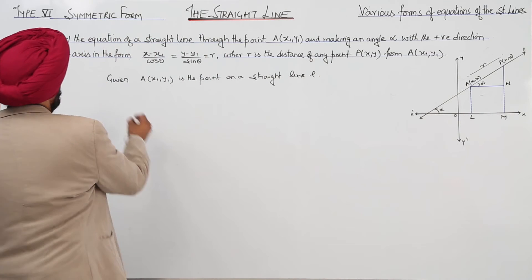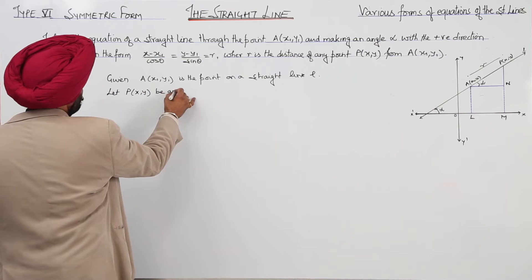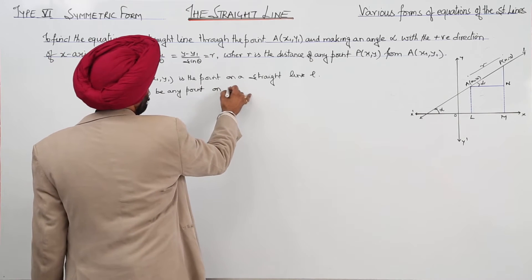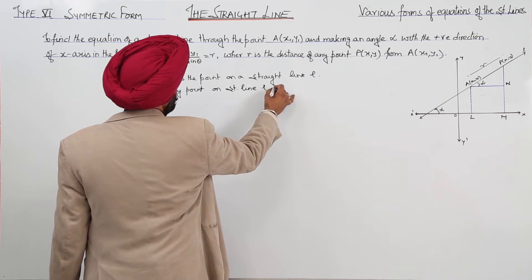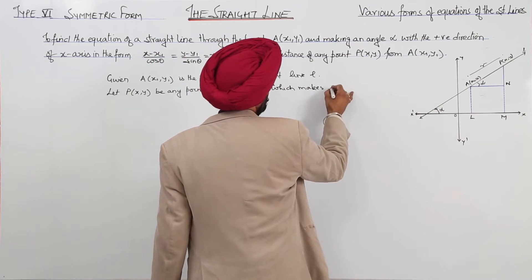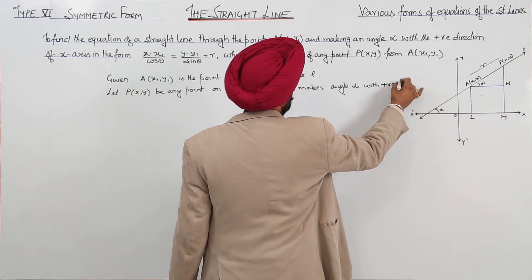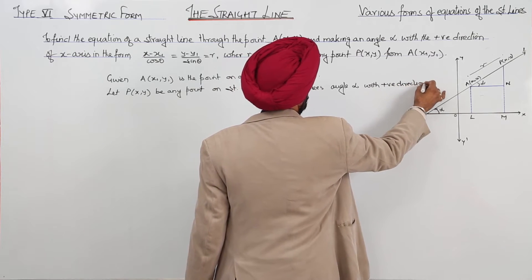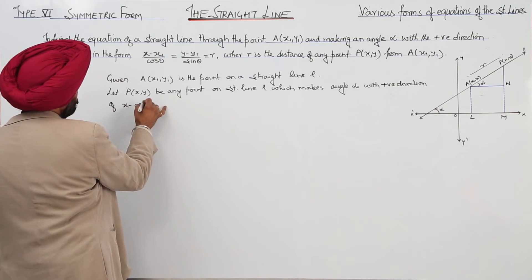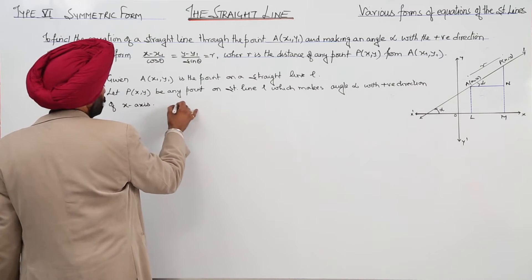Now, let us start here. Let P at x comma y be any point on straight line L which makes angle alpha with the positive direction of x-axis. I have already mentioned this as alpha.